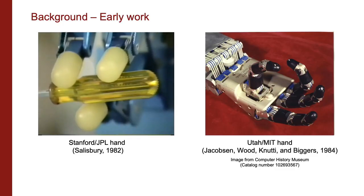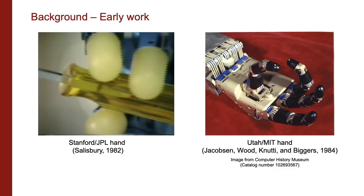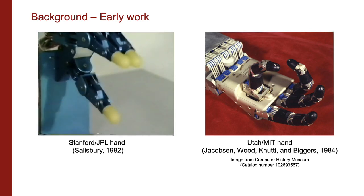The Stanford JPL hand and the Utah MIT hand are among the earliest robot hands possessing within hand manipulation capabilities.